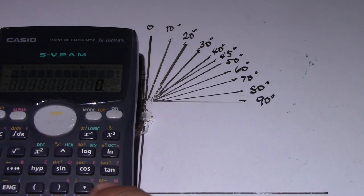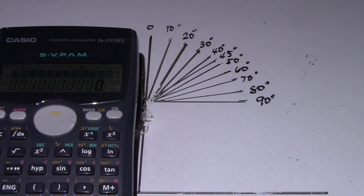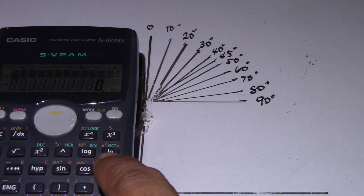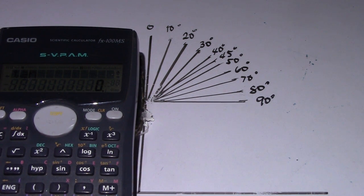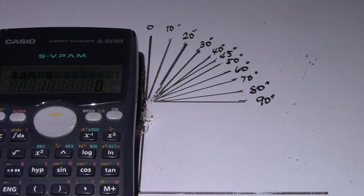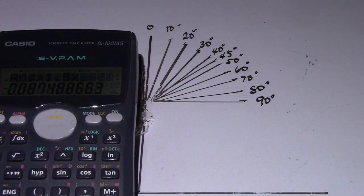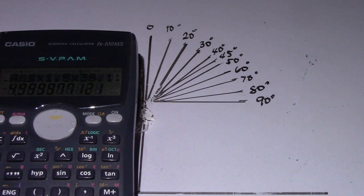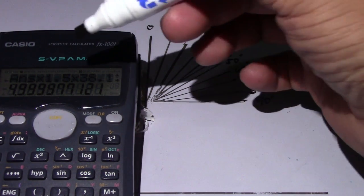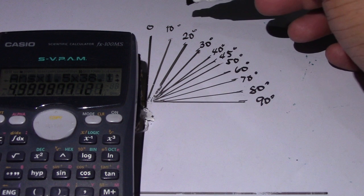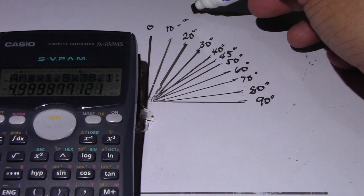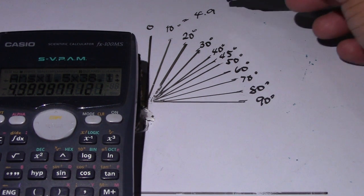We will compute 10 degrees and find the constant angle. Half of 10 degrees is 5. Tangent of 5, then multiply it to 1.5 and multiply it to 38.1. So our answer for the 10 degrees constant angle is 4.9.